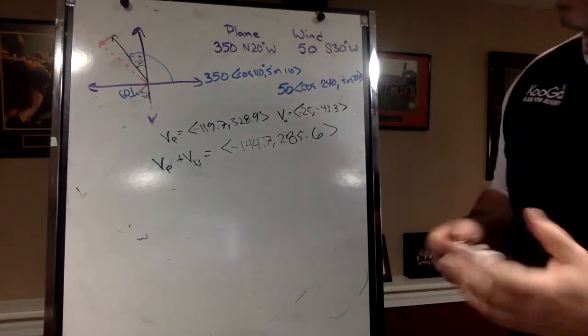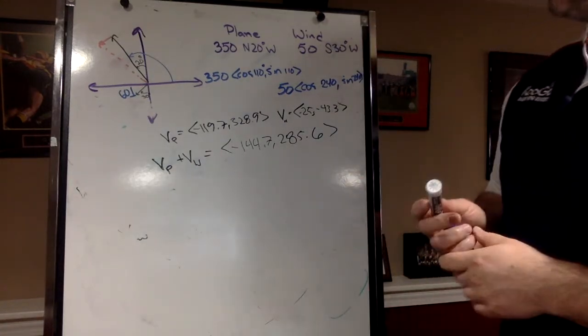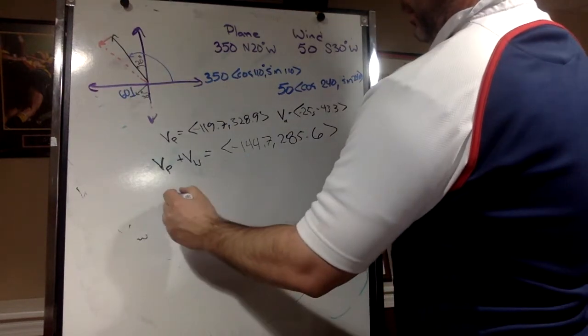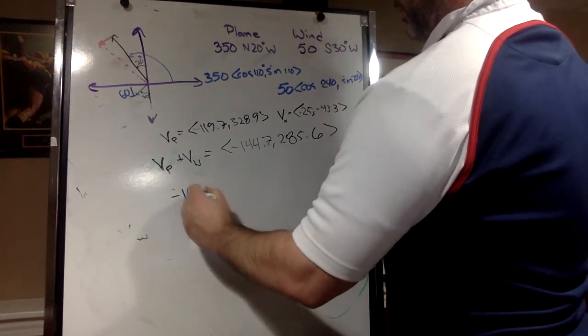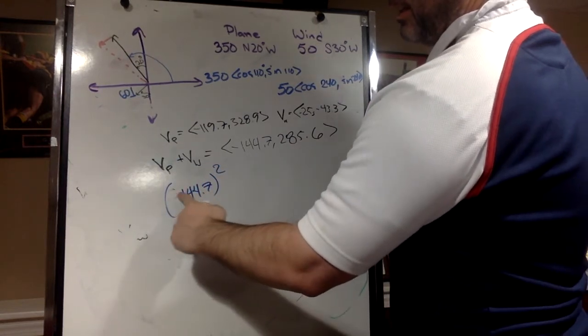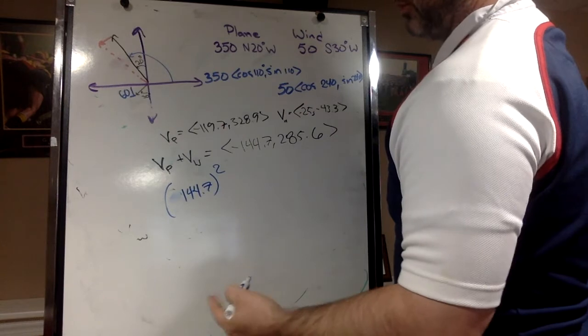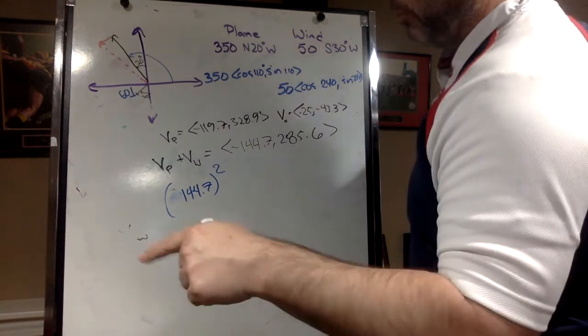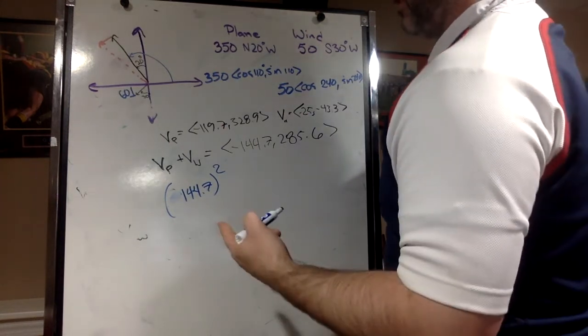All right, so how do I find the speed? Well it's right there, it's again distance formula. Negative 144.7 squared - and really you're going to see me ignore the negative because I don't want to screw up on my parentheses or whatever, because if I just do negative 144 squared in my calculator it's going to give me a negative, but I can't square and get a negative.